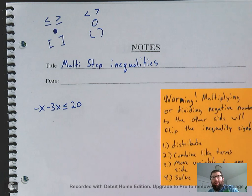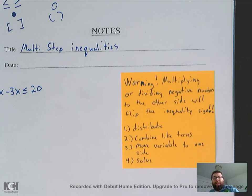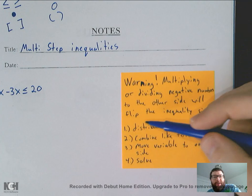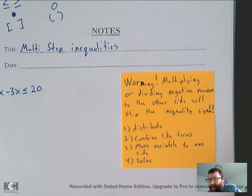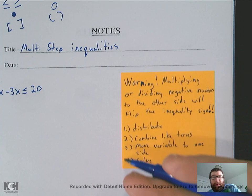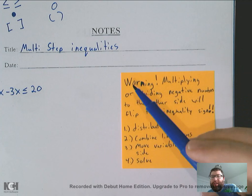When we are doing multi-step inequalities, these are going to be pretty much the same as multi-step equations. You're going to have those same four general steps. You always look to distribute first. If there's anything to distribute, you do that first. Then you combine like terms. And then you move the variable to one side if it's on both sides. And then at that point, it should just be a party problem and you solve.